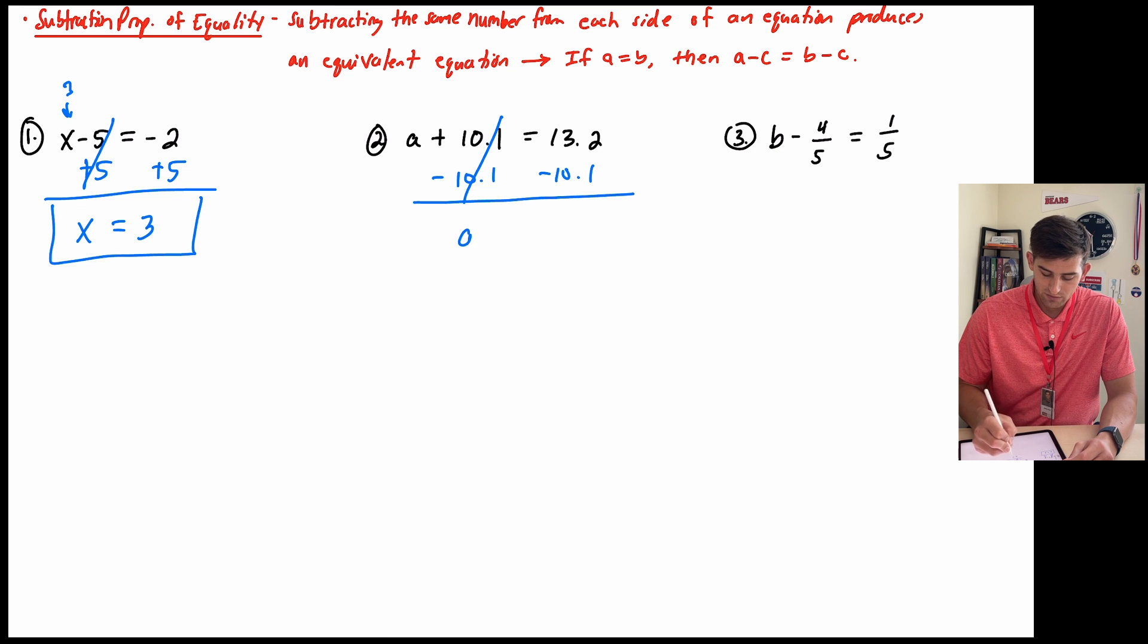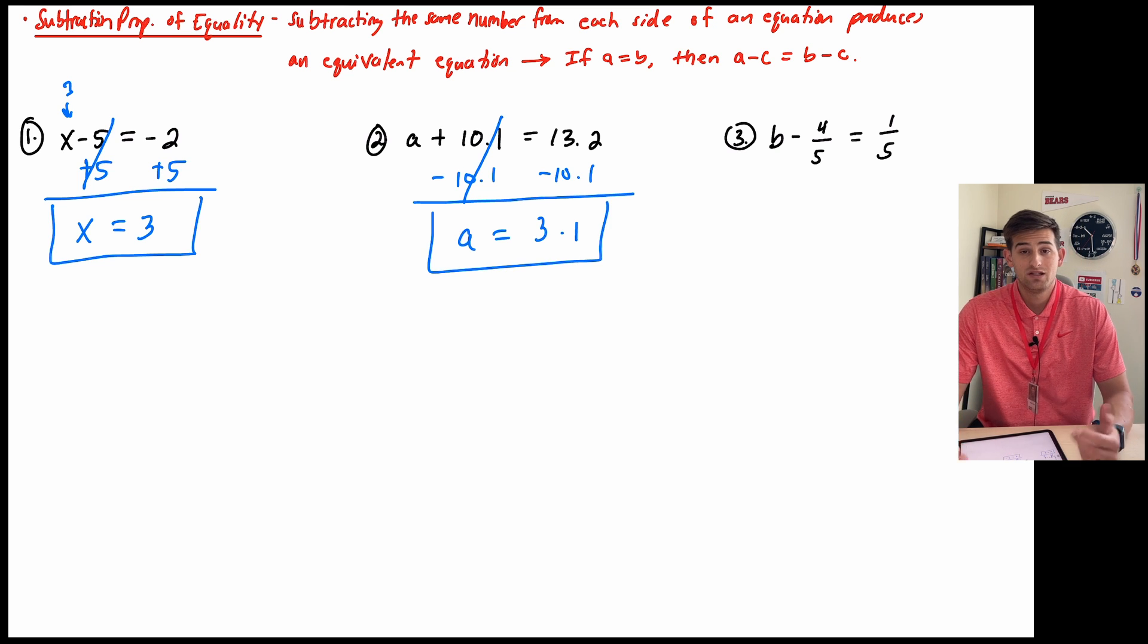So we get A is equal to, and now we can subtract over here. 2 minus 1 would be 1, and 13 minus 10 would be 3. So my answer for number 2 would be A is equal to 3.1. And once again, we could plug that in for A to check and make sure, and it does work. So we did it right.